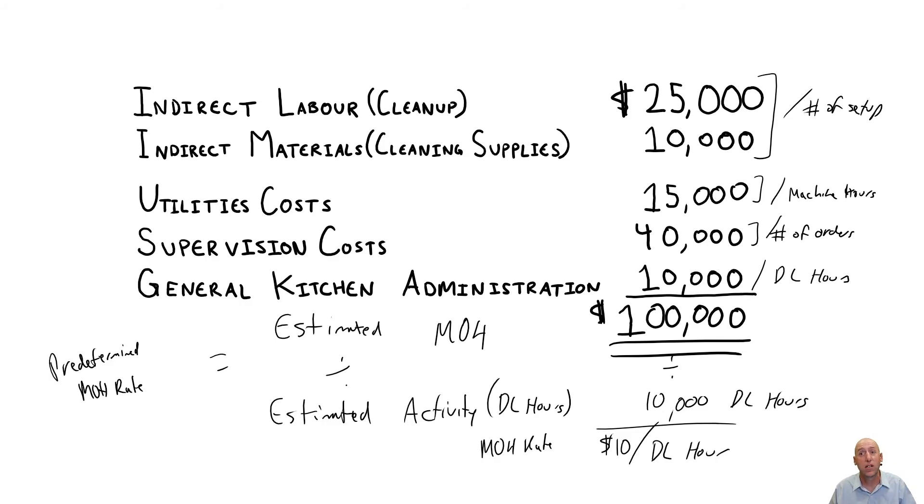Most companies don't do that. Most companies say, you know what? The simple method is good enough. I don't need to be tracking all this extra data. It comes with a lot of extra expense to track all the extra data. I'm just going to use one overhead rate. But some companies who find their costing system isn't working, their estimates are bad estimates, would be wise to switch to this kind of system.